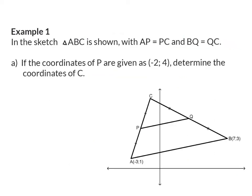Example 1. In the sketch, triangle ABC is shown with AP the same length as PC, and BQ the same length as QC. Question A: if the coordinates of P are given as minus 2, 4, determine the coordinates of C.